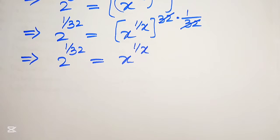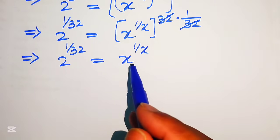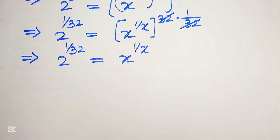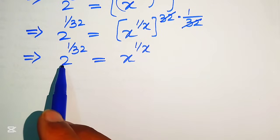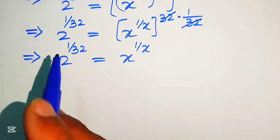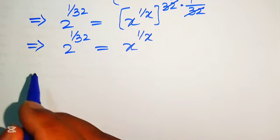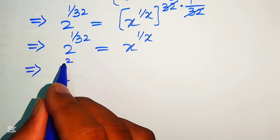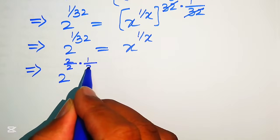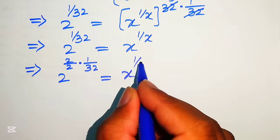In the next step, on the left hand side the exponent of this term should be the reciprocal of its base. To achieve this condition, we multiply and divide the exponent of the left hand side by 2, and carry on this multiplication until we get the exponent as the reciprocal of its base. So first we multiply and divide the exponent by 2: it will be written as 2 over 2 to the power of 1 over 32, equaling x to the power of 1 over x.